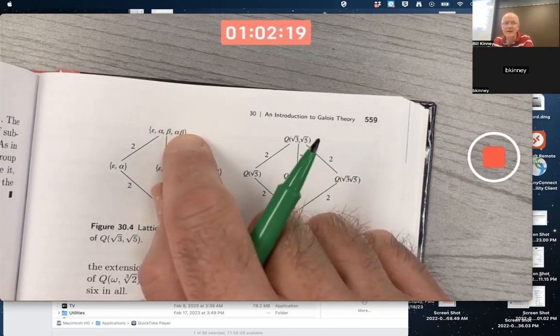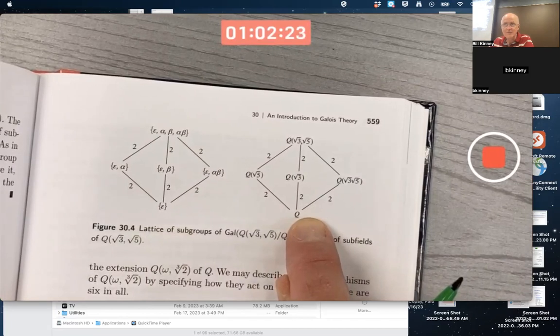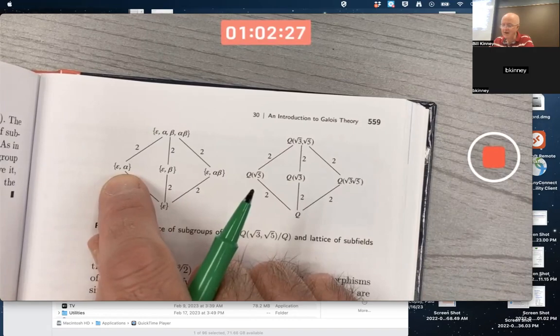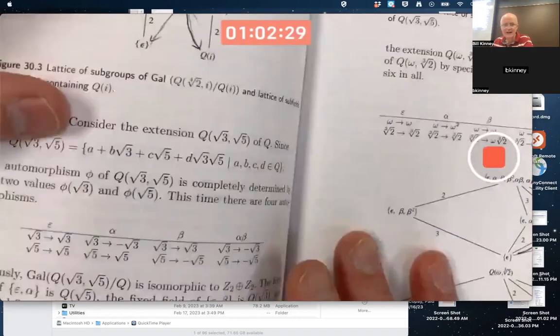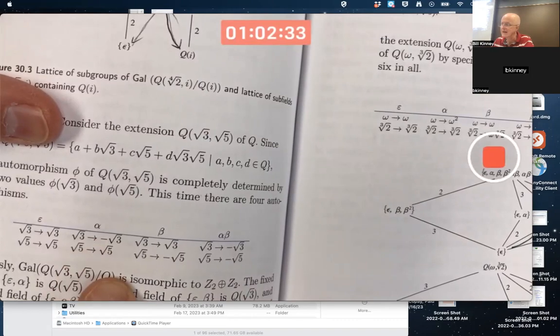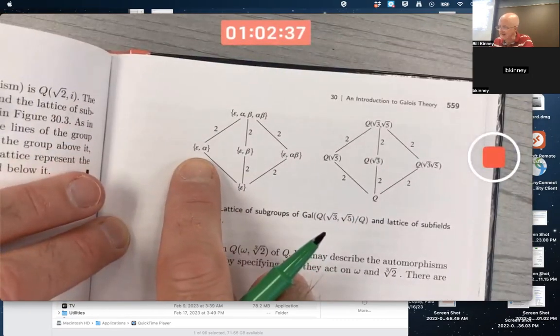The fixed field of this entire thing would be Q. What's the fixed field of epsilon alpha? I guess we've got to look at what alpha does. Alpha fixes square root of 5. It doesn't fix square root of 3. The fixed field of that is that.